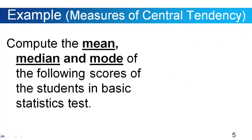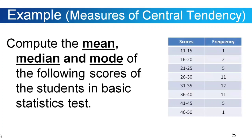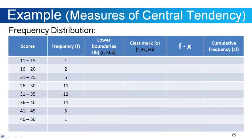Compute the mean, median and mode of the following scores of the students in a basic statistics test. We have here our frequency distribution. The first column is the ranges of the scores of the students, and the second column has the number of students with their corresponding score. We're going to spread out our frequency distribution into six columns. The total frequency is n = 48, meaning we have 48 students.